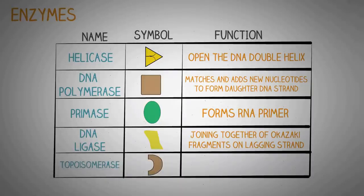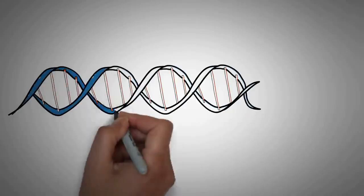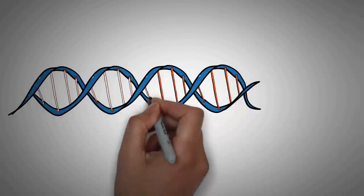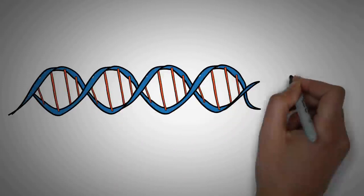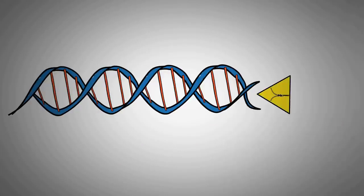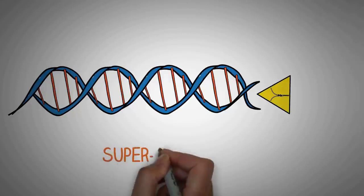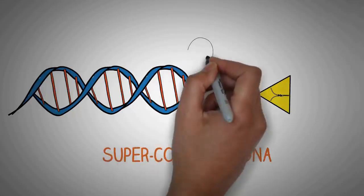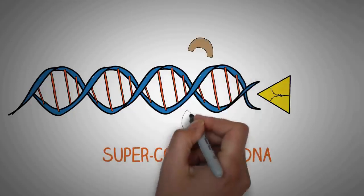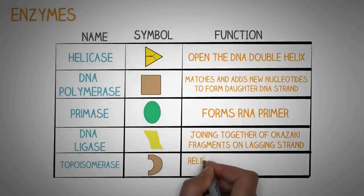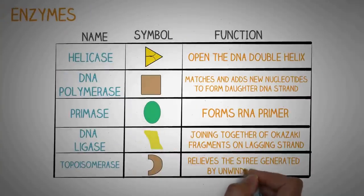The final enzyme is topoisomerase. The DNA double helix consists of two strands twisted around each other. When helicase opens up the DNA, stress is generated in the strands which can lead to supercoiling. Topoisomerase solves this by cutting and resealing fragments of DNA to relieve the stress produced by unzipping of the DNA.